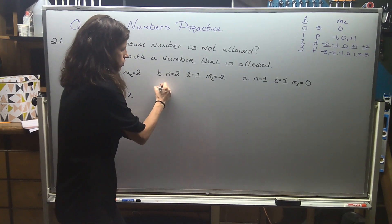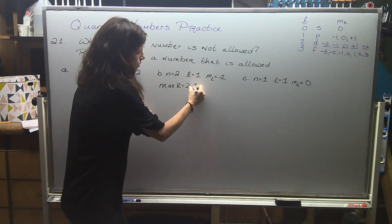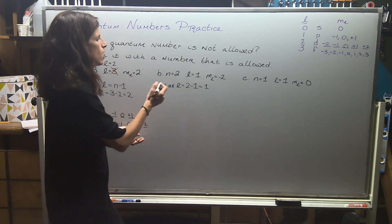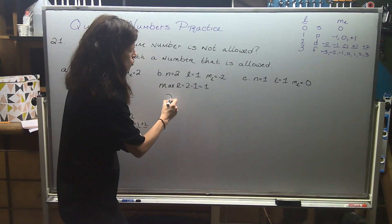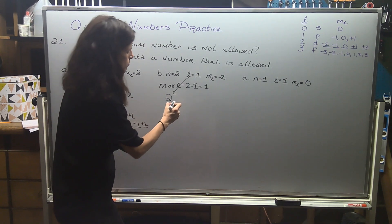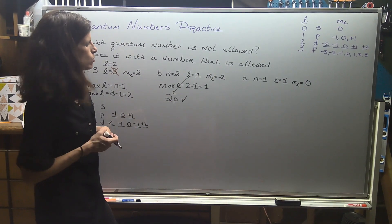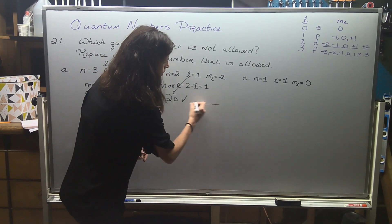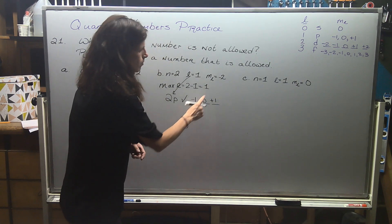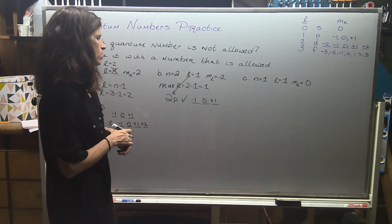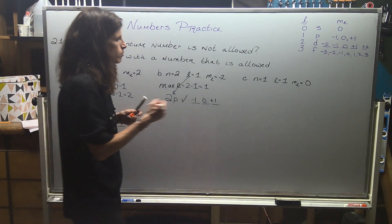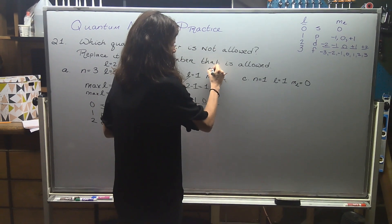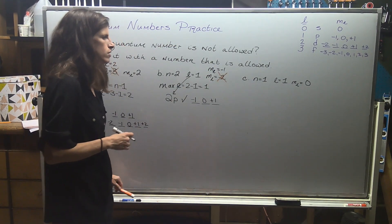We can also think about it in terms of electron configurations: n equals 2 and l value p — yes, there are 2p orbitals. The issue here is that p orbitals only have three orientations defined by ml values of negative 1, 0, and positive 1. So the non-allowed number is the ml value that falls outside that range — you can replace it with any of those three numbers.